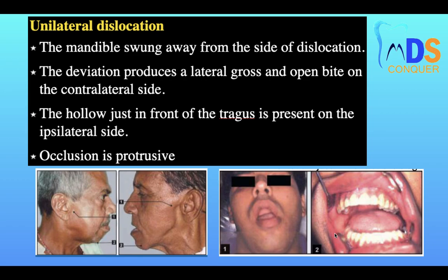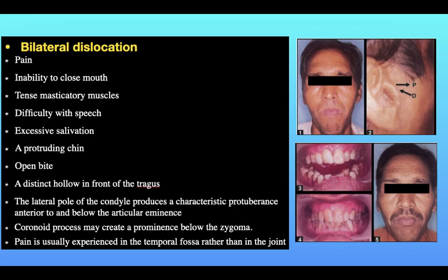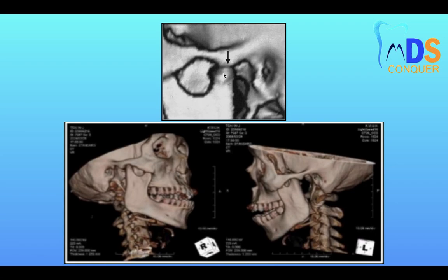Dislocation can be unilateral or bilateral. Clinical features of unilateral dislocation include: the mandible swings away from the side of dislocation, open bite on the contralateral side, a distinct hollow in front of the tragus on the ipsilateral side, and protrusive occlusion. In bilateral dislocation: pain, inability to close the mouth, tense masticatory muscles, difficulty with speech, excessive salivation, a protruding chin, anterior open bite, and distinct hollows in front of the tragus bilaterally.